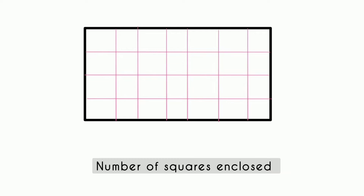A rectangle is made up of small squares. The number of squares depends upon the length and the breadth of the rectangle. To find the area of a rectangle, we measure the small squares inside the rectangle.